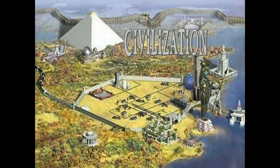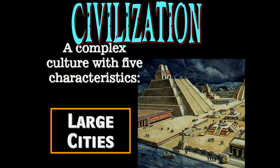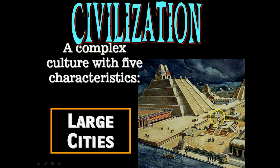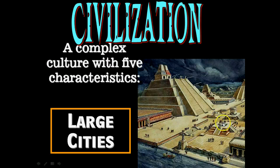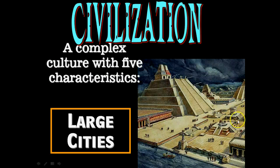There are five key things that you need when you look at a civilization. Number one, you've got to have large cities, because this is where everyone is going to meet — right in the downtown area. This is where merchants come, farmers come, everyone comes to sell and buy new things. And this changes man. But large cities aren't enough.